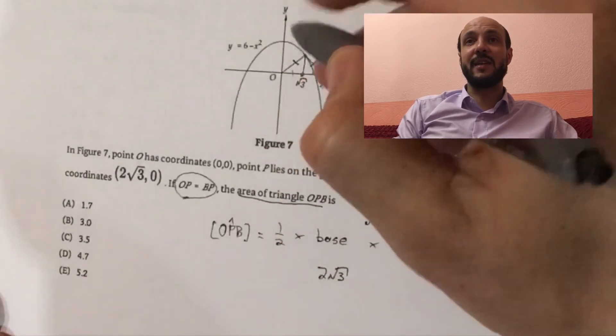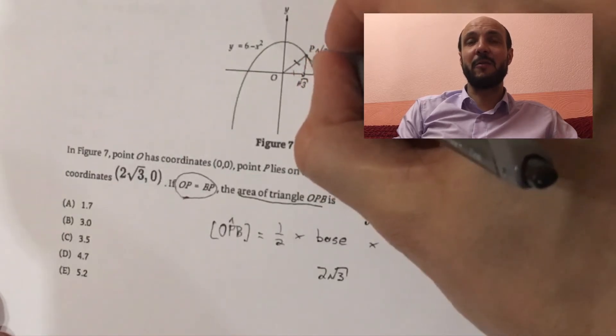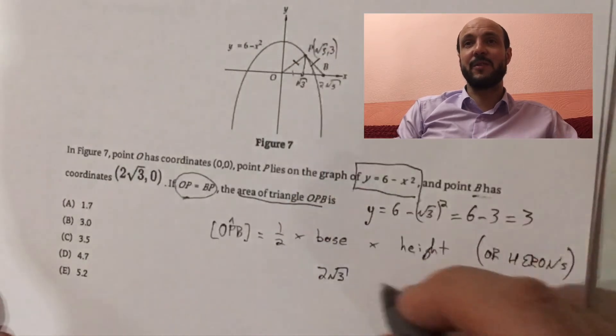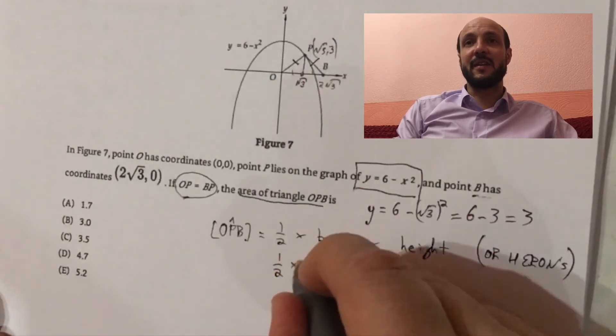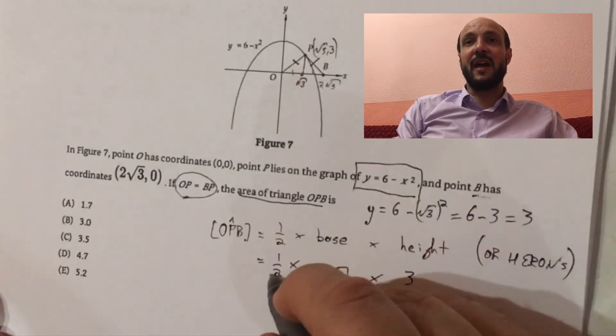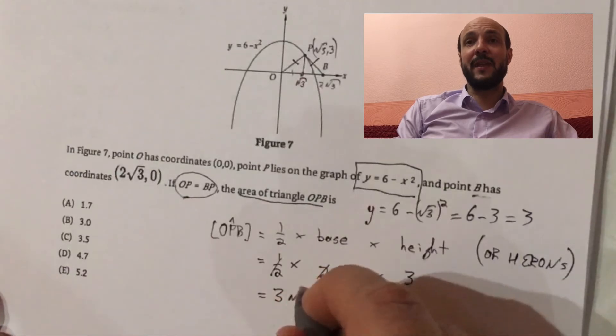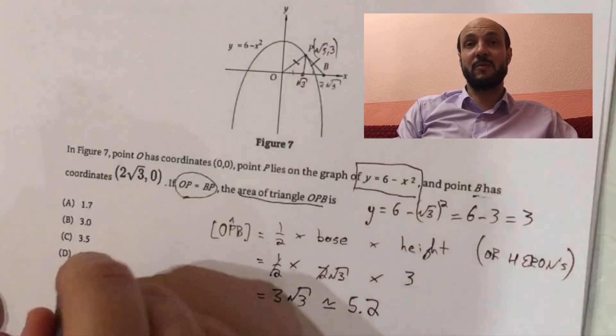So the y-value is 3, and that's actually the height of our triangle. The y-value of P is how high up our triangle's going. So we know the base, we also know the height is 3, so we have half times 2 root 3 times 3. Half and 2 cancel out, we're left with 3 root 3. If we put that into our calculator, we'll see 3 root 3 is about equal to 5.2, which is one of our answers.